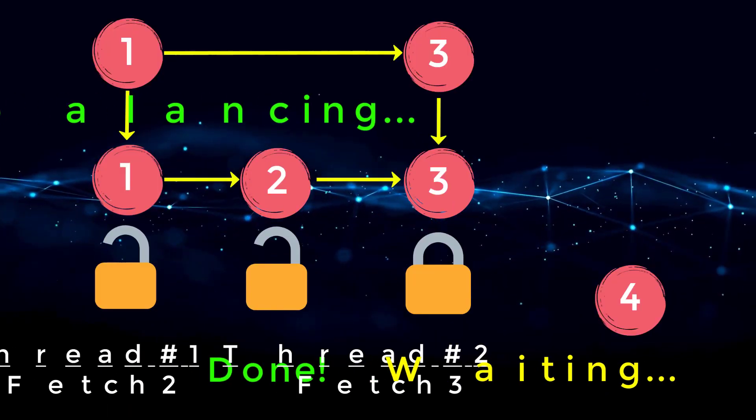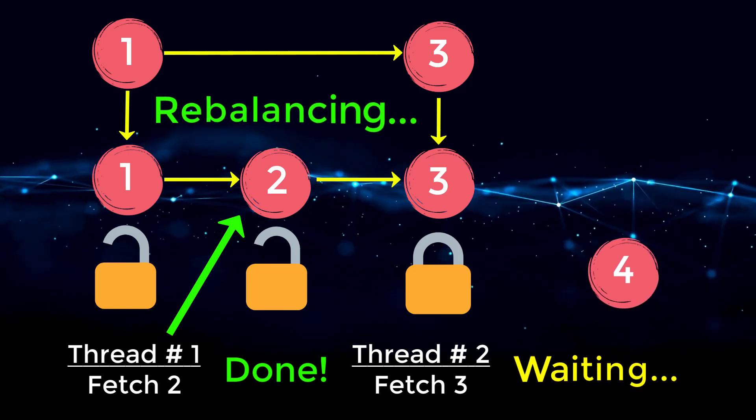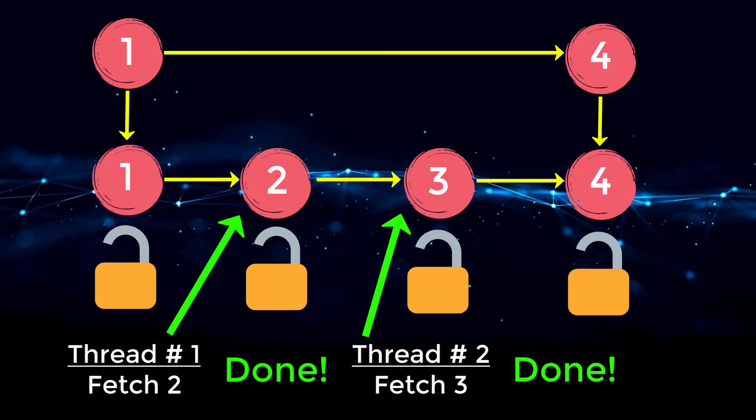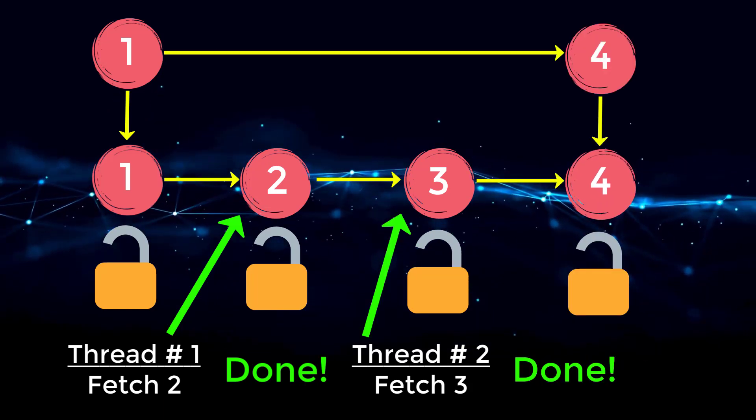However, for a skip list, we can have the same functionality as the balanced trees, and we can put a mutex on every single node. Thus, we only need to lock nodes that are directly affected.